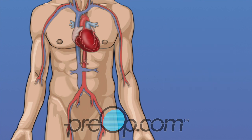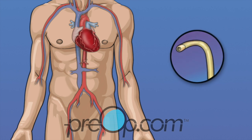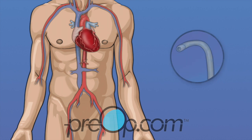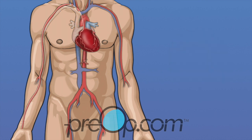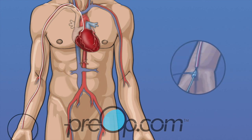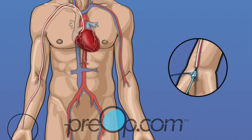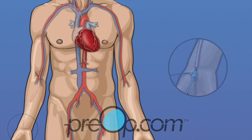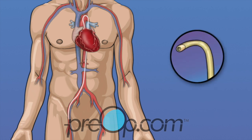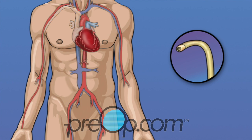To do a cardiac cath, a cardiologist places a thin tube called a catheter through an artery in your leg or arm to reach your heart. The femoral artery in the leg is most commonly used. The catheter is inserted into the artery in the groin, then guided to reach the heart. The radial artery in the arm is another site where a catheter can be placed. The catheter is inserted at the wrist, then guided to reach the heart.